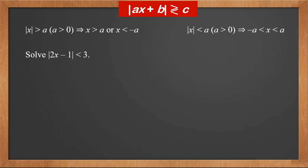For example, solve the modulus of 2X minus 1 is less than 3. We know 2X minus 1 is between minus 3 and 3. Add 1, and we get 2X is between minus 2 and 4. Divide by 2, and we get the solution as X is between minus 1 and 2.